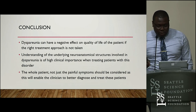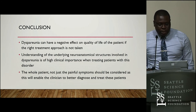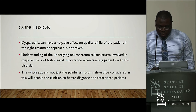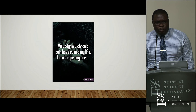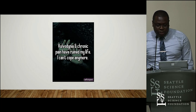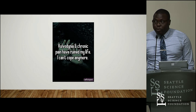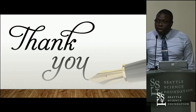In conclusion, dyspareunia can have a significant negative impact on the quality of life of affected patients. Understanding the neuroanatomical structures involved is of high clinical importance. You don't just want to treat the pain — you want to treat the whole patient. To illustrate this, there's an anonymous post from the social media platform Whisper that reads: 'Vulvodynia and chronic pain has been in my life — I can't cope anymore.' It shows that this is not just about pain, it's about everything, and we have to take it seriously. The papers are referenced in the presentation. Thank you very much, everyone.